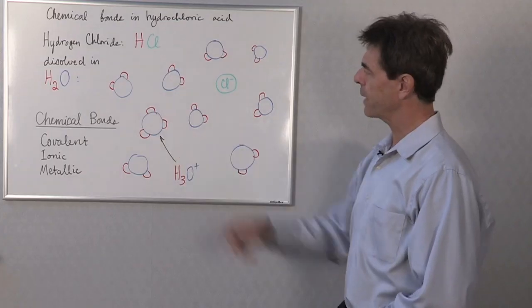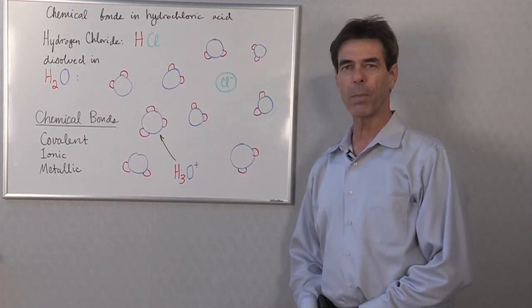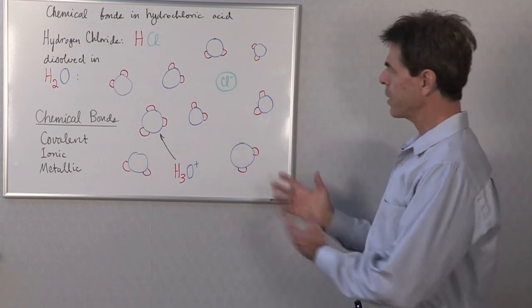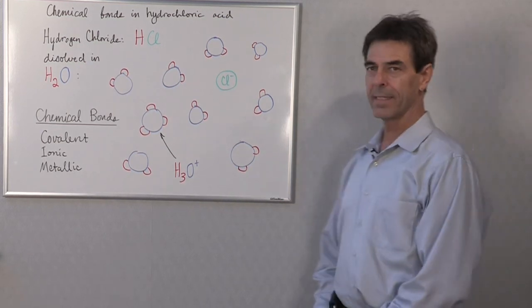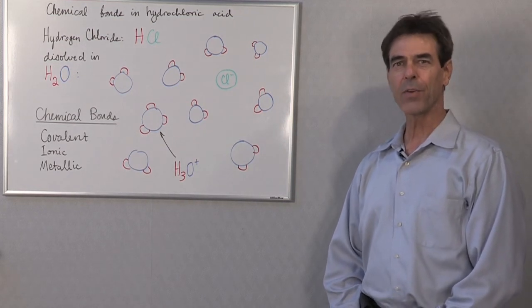And this molecule here is called hydronium, H3O+. So these are the chemical bonds in hydrochloric acid, which is hydrogen chloride dissolved in water. Thank you for watching.